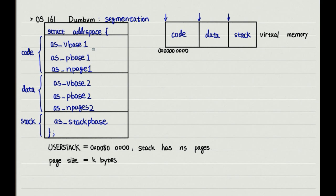Except that instead of using the upper n bits of the virtual address to determine the segment number, we will use VBase and n-pages. The bottoms of the code and data segments are VBase and the tops are VBase plus the size of the segment, that is n-pages times page size k bytes.